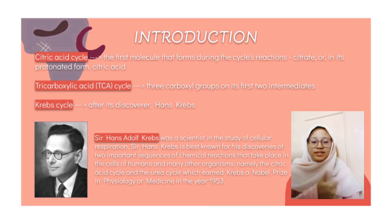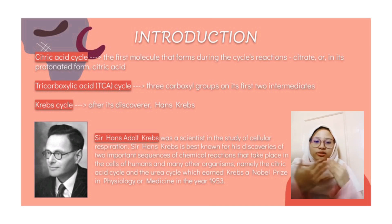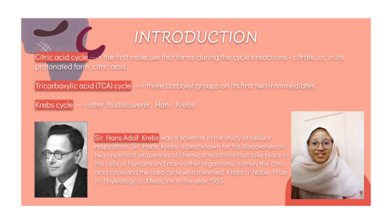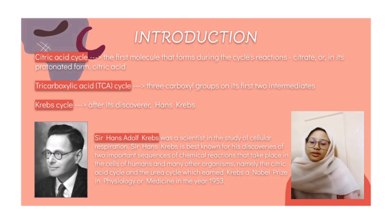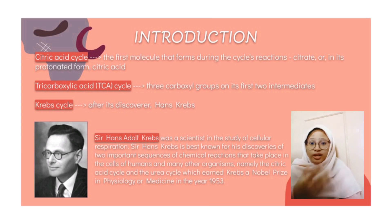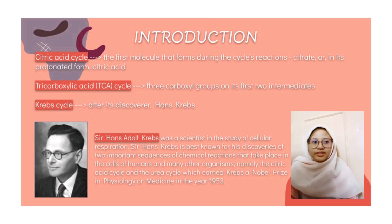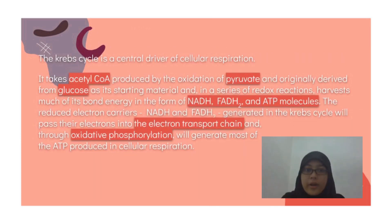Sir Hans Adolf Krebs was a German-born British biologist, physician, and biochemist. He was a pioneer scientist in the study of cellular respiration — a biochemical process in living cells that extracts energy necessary for daily life from food and oxygen. Sir Hans Krebs is best known for his discoveries of two important sequences of chemical reactions: the citric acid cycle and the urea cycle, which earned him a Nobel Prize in Physiology or Medicine in 1953.